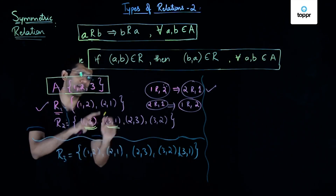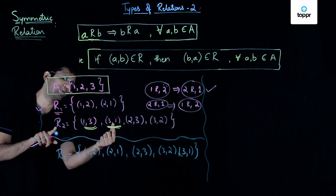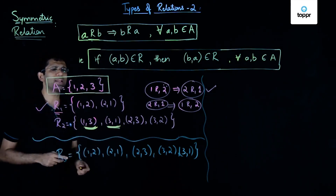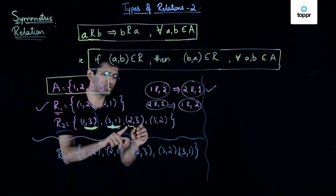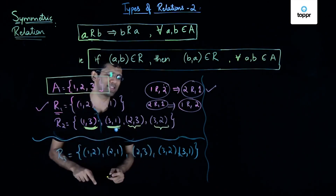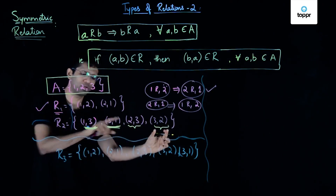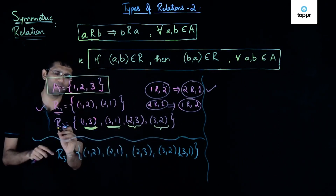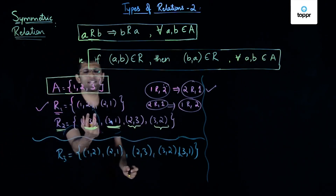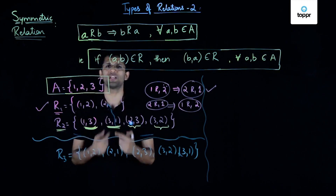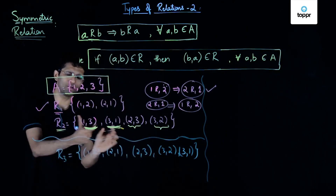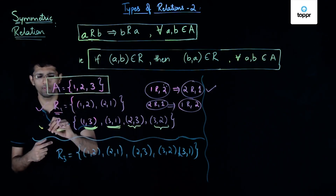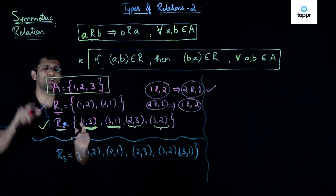Similarly, checking the ordered pairs (2, 3) and (3, 2): (2, 3) implies (3, 2) is also part of R2, and likewise (3, 2) implies (2, 3) is also part of R2. So whenever the first and second coordinates of every ordered pair are swapped, the resulting ordered pair also lies in R2. We therefore state that R2 is a symmetric relation on set A.